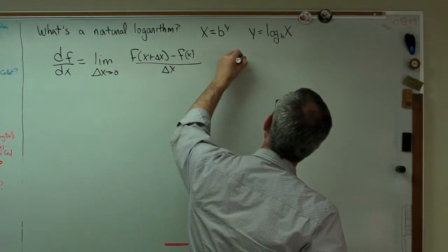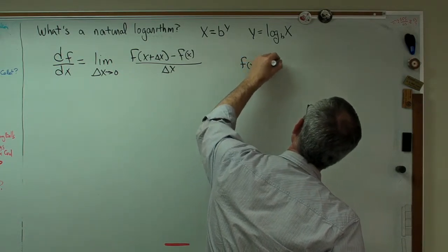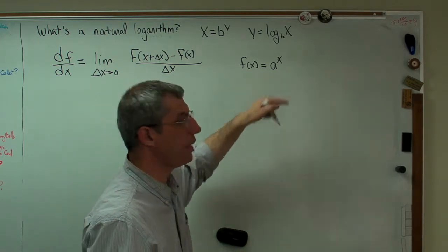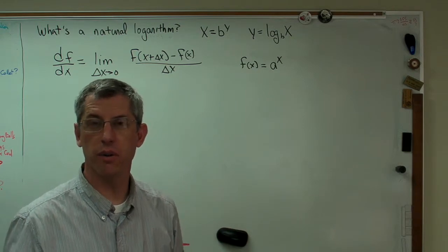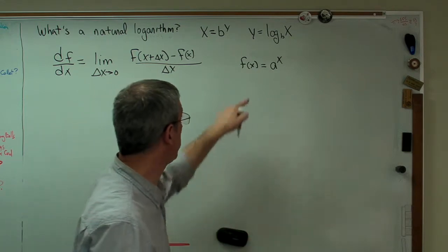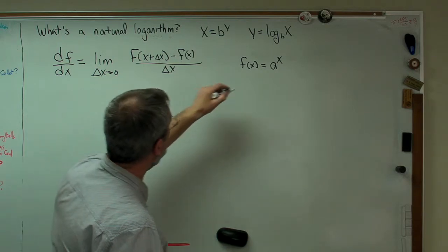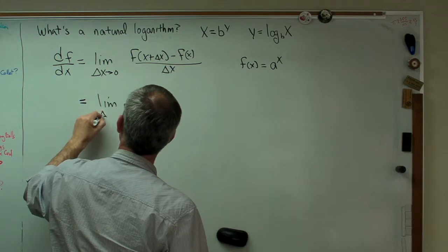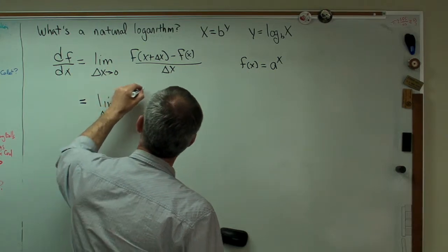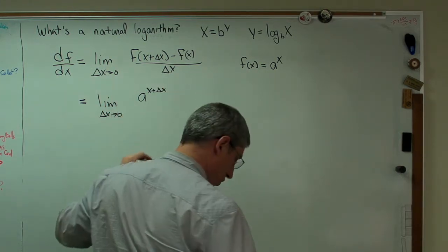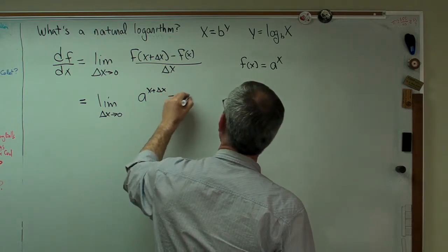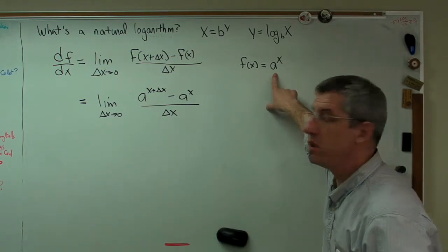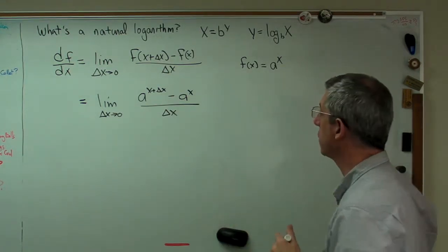Well, what if f of x equals a to the x, where a is just a number, and a can be anything right now. I don't care what a is yet, but we're going to show why we want a to turn into e. So let's just plug in a to the x everywhere we see f of x. So all I've done is I've substituted a to the x in here. So far, so good.